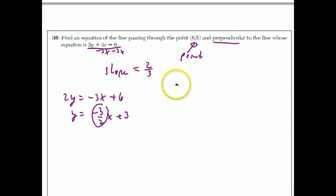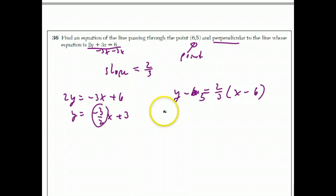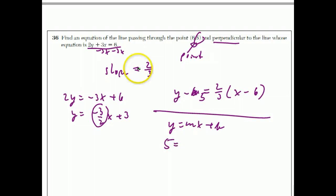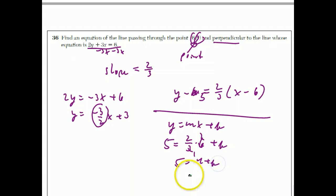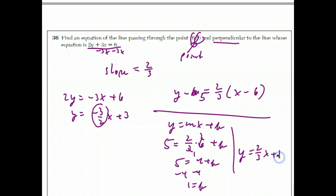Now we have all the information. Using slope-intercept form Y equals MX plus B, replace Y with 5, M with 2/3, and X with 6. This gives 5 equals 4 plus B, so subtract 4 from both sides to get B equals 1. The answer is Y equals two-thirds X plus 1.